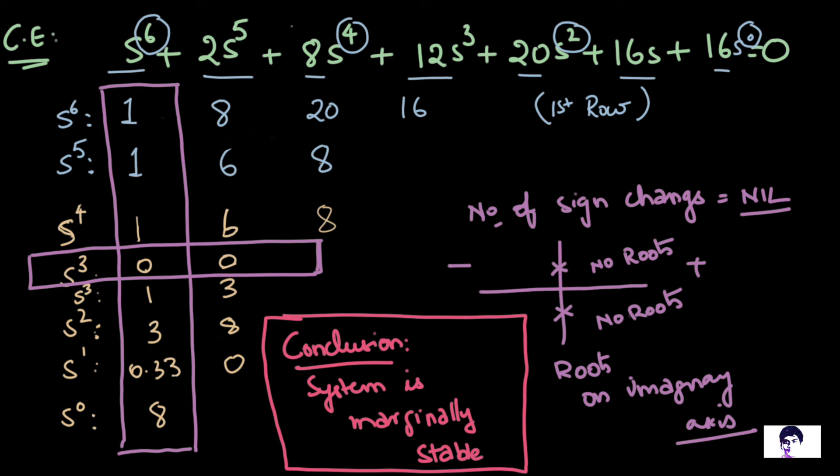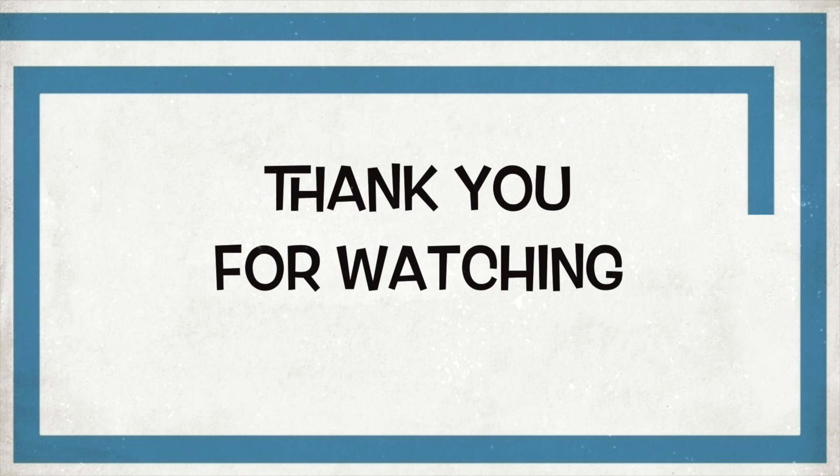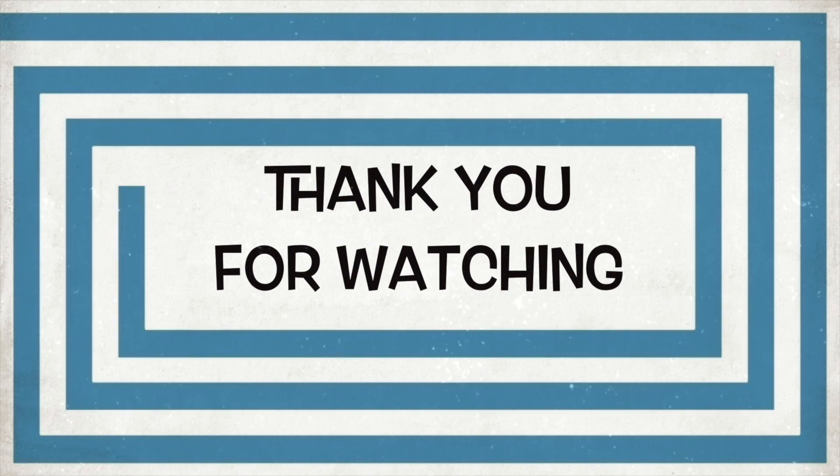So that is it guys. This is an example for Case 2, that is a row of zeros for Routh stability criterion. If you guys have any queries, please leave them down in the comments below and I will try to get to them as soon as possible. And if you guys have an exam coming up, I wish you all the very best. Thank you for watching and have a lovely day.